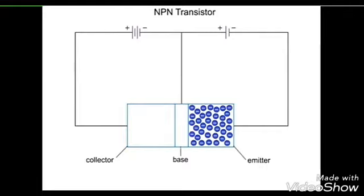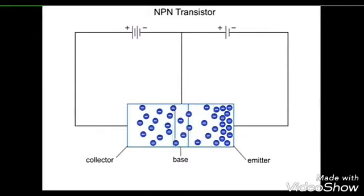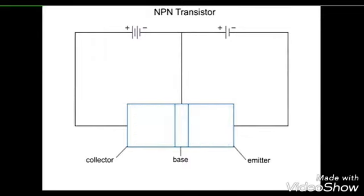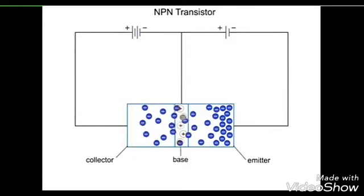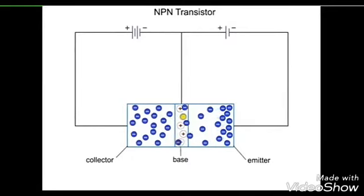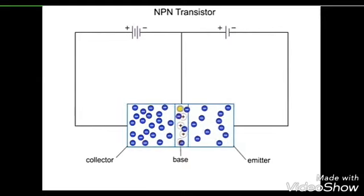Most of the emitter carriers diffuse through the thin base region because they are attracted by the collector region. Some of the electrons are attracted by the holes in the base region and will move off through the right side, shown here. This is a very small amount compared to the current moving through the base into the collector.